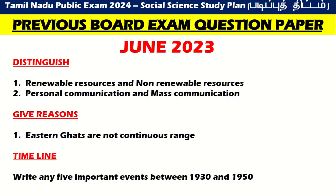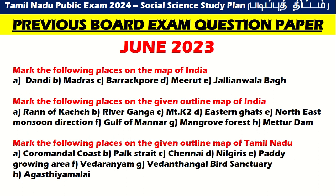June 2023: history map — Barrackpore, Madras, Meerut, Jallianwala Bagh. 8 mark map of India: Rann of Kutch, River Ganga, Mount K2, Eastern Ghats, northeast monsoon direction, Gulf of Mannar, Mangrove Forest, and Mettur Dam. Map of Tamil Nadu — 5 marks: Coromandel Coast, Palk Strait, Chennai, Nilgiris, paddy growing area, Vedaranyam, Vedanthangal Bird Sanctuary, and Agasthiyamalai.